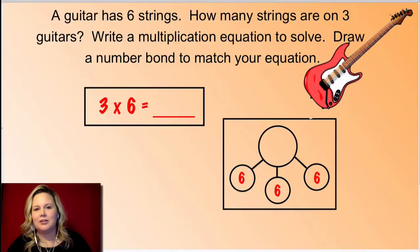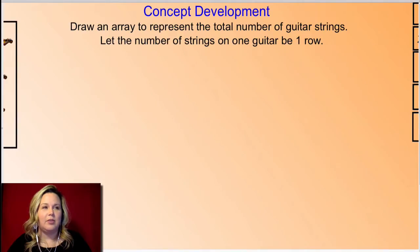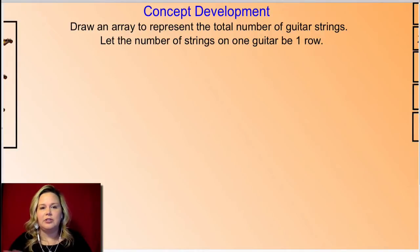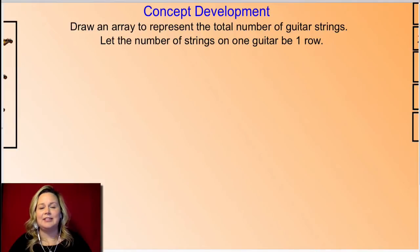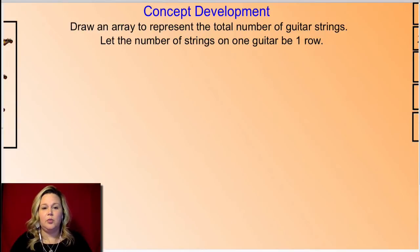Let's dive in a little bit deeper, because our lesson talked about how we were going to break apart arrays, and we didn't use arrays in this part of the problem. So now let's jump in and draw some arrays that go along with it. You're going to draw an array to represent the total number of guitar strings — the same problem we just did. You're going to let the number of strings on the guitar be one row, so you should have three guitars and six strings on each one. Go ahead and pause the video, draw your array, and then click play when you're ready.